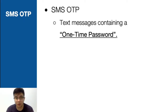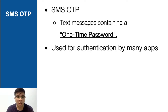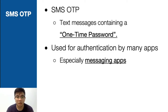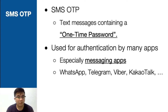Before we start, let's discuss what is SMS OTP. SMS OTP is text messages containing a one-time password, and it's used for authentication by many apps, especially messaging apps like WhatsApp, Telegram, Fiber, and KakaoTalk. All those apps actually use SMS for authentication.